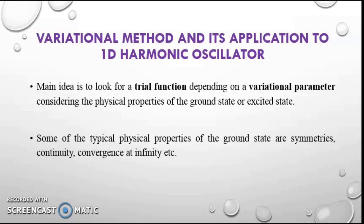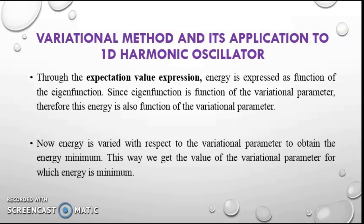The main idea is to look for a trial function depending on a variational parameter, considering the physical properties of the ground state or excited state. Some of the typical properties of the ground state are symmetries, continuity, convergence at infinity, etc.